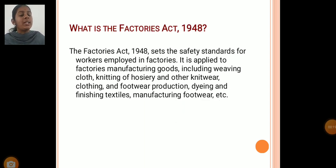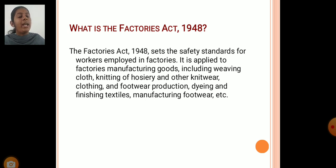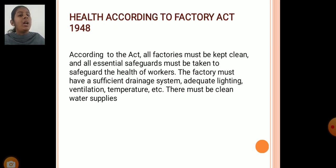What is the Factories Act 1948? The Factories Act 1948 sets a safety standard for workers employed in the factories. It is applied to factories manufacturing goods including weaving cloths, knitwear clothing, and footwear production and dyeing and finishing textiles, and manufacturing footwear, etc.